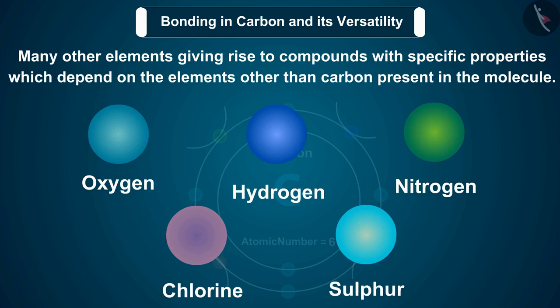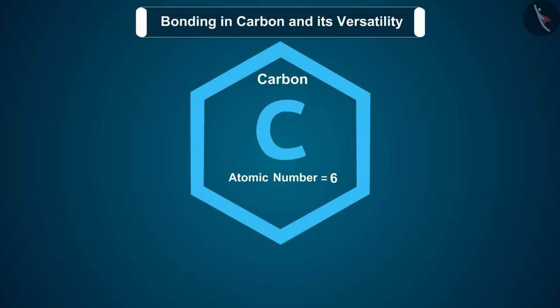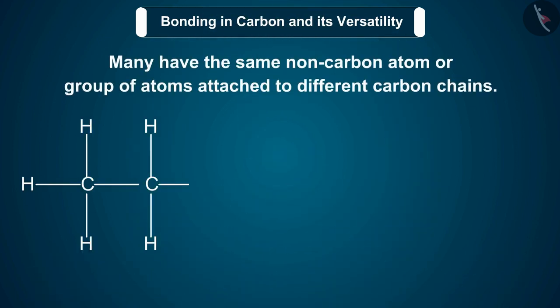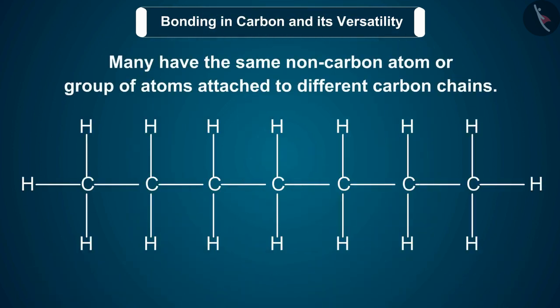The two characteristic features seen in carbon, that is tetravalency and catenation, put together give rise to a large number of compounds. Many have the same non-carbon atom or group of atoms attached to different carbon chains.